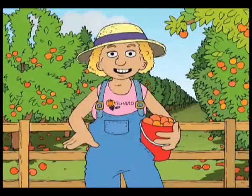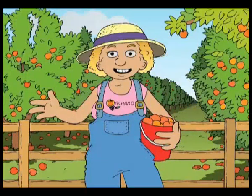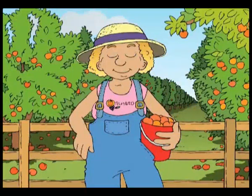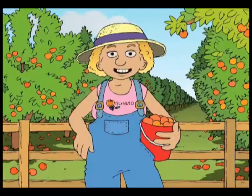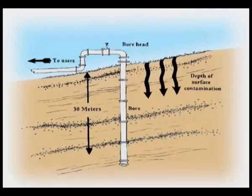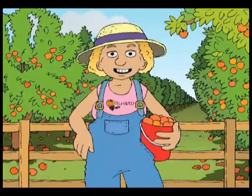We get our water out of the ground and we're surrounded by orchards and dairy farms. There's a lot of runoff in the groundwater — chemicals and nitrates, and there's boron and arsenic as well. We have to manage this problem by having bores that are more than 30 metres deep. That means that the water we collect for our supply comes from deeper than the water that's contaminated by the runoff.